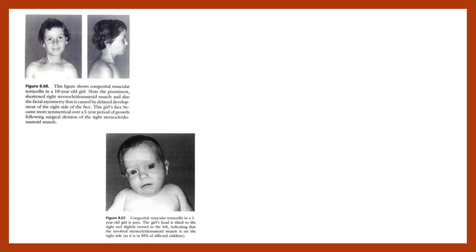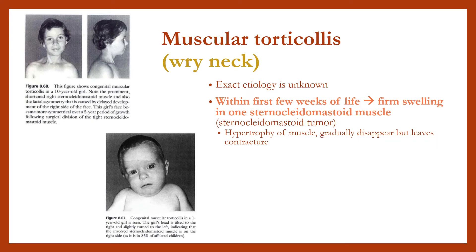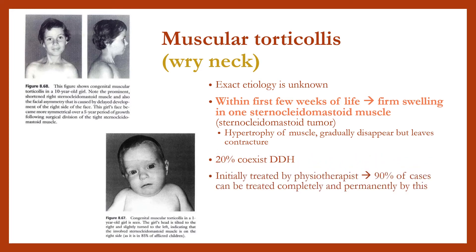Muscular torticollis: the exact etiology is still unknown. Within the first few weeks of life, a firm swelling appears in one sternocleidomastoid muscle with hypertrophy, which gradually disappears but leaves contracture. 20% co-exist with DDH. Initially treated by physiotherapy; 90% of cases can be treated completely and permanently by physiotherapy. For resistant cases, release of the soft tissue contracture is performed.